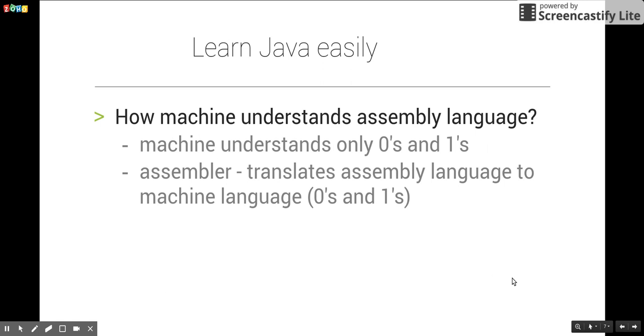The assembler converts mnemonics to binary representation - zeros and ones. The assembler is an intermediary that translates assembly language to machine level language.